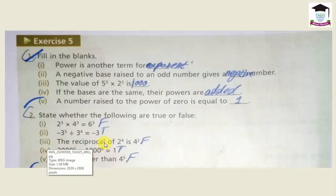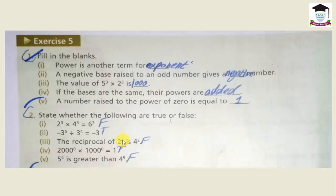Third statement: the reciprocal of 2 power 4 is 4 power 2. This is false. The reciprocal means if the power is positive, it becomes negative, and if negative, it becomes positive. So the reciprocal of 2 power 4 is 2 power minus 4, not 4 power 2. Therefore this statement is false.